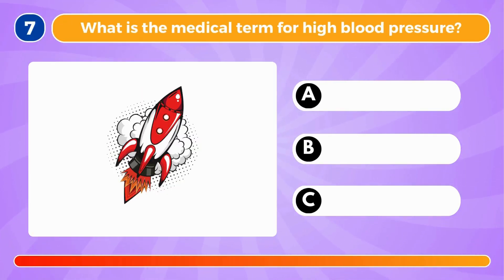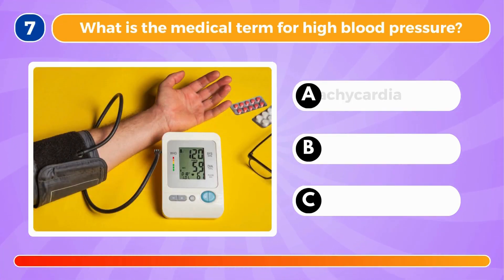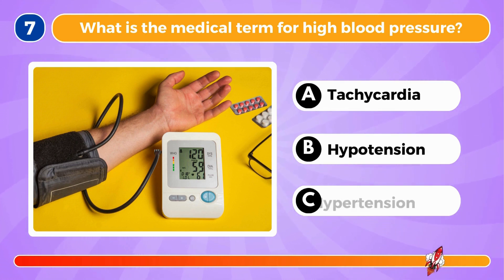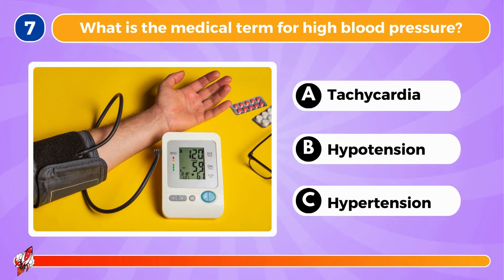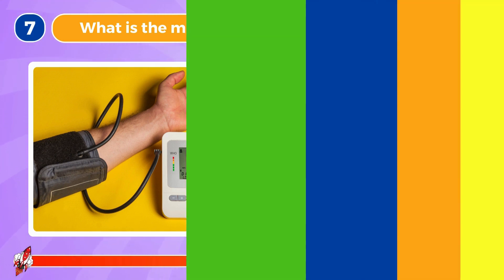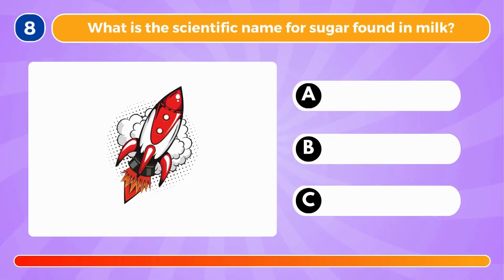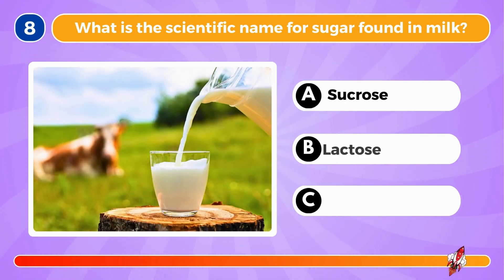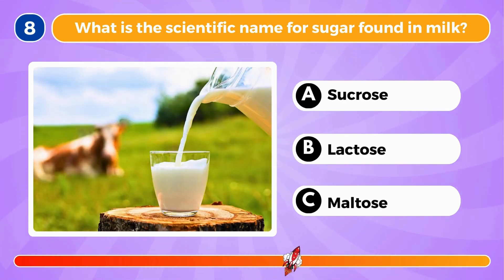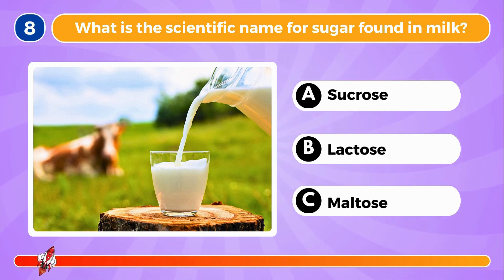What is the medical term for high blood pressure? It's hypertension. What is the scientific name for sugar found in milk? It's lactose.